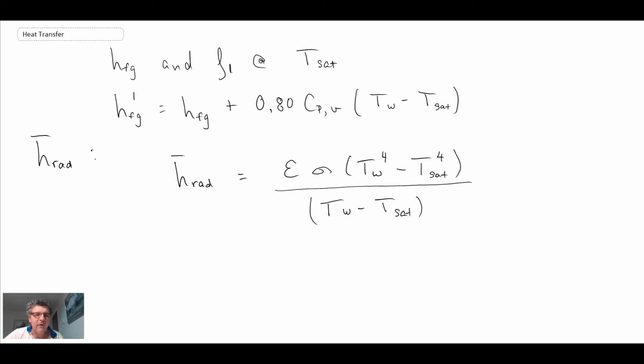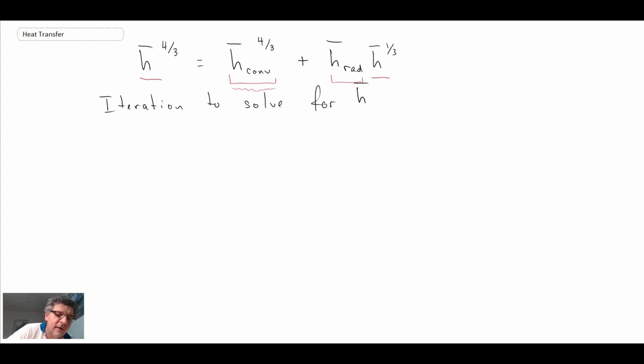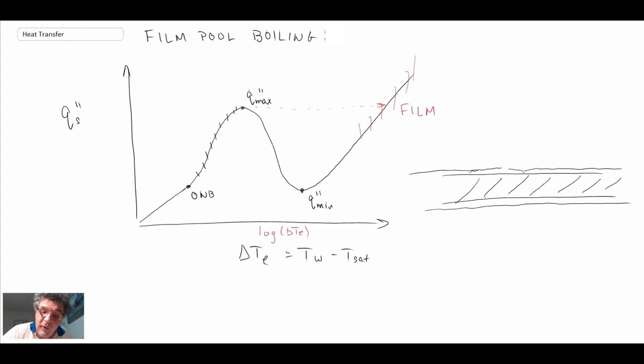That's how you determine h_rad. You take the value of h_convective and plug it into this equation, then iterate to solve for h_bar. When you get that, you've estimated the convective heat transfer coefficient in the film region where we have a combination of both convective and radiative heat transfer.